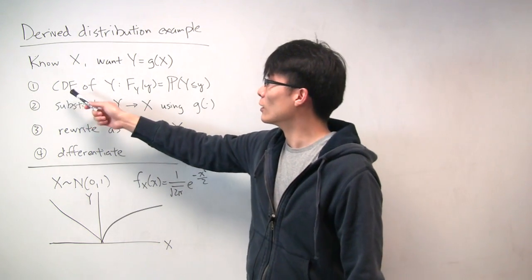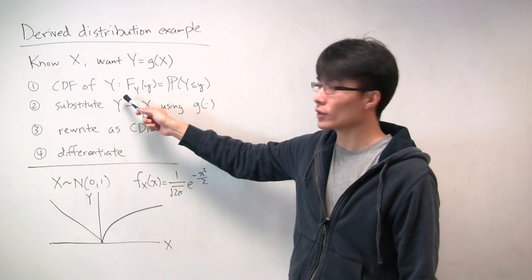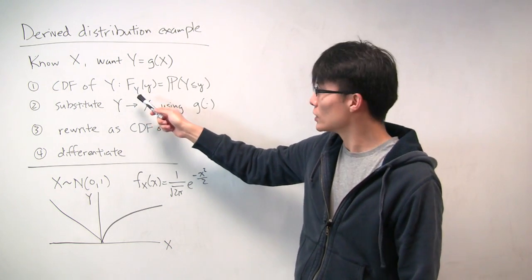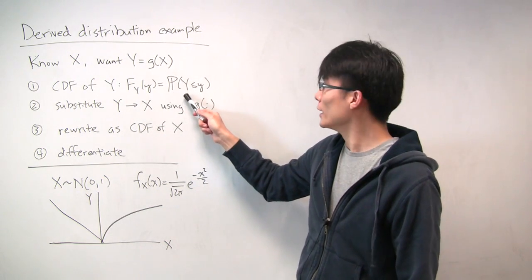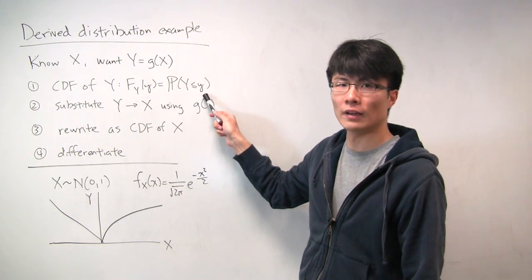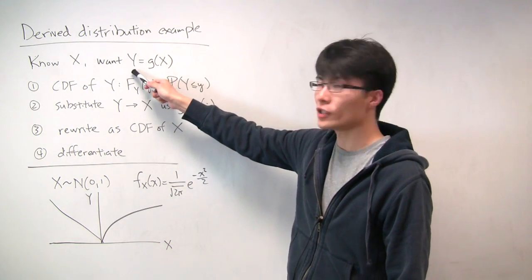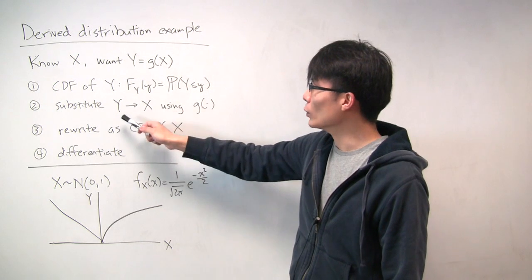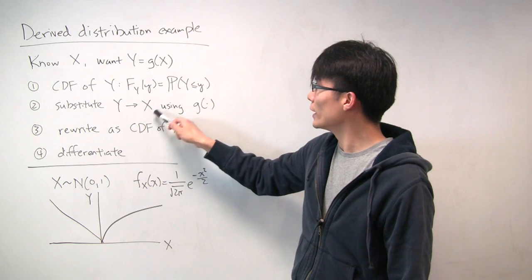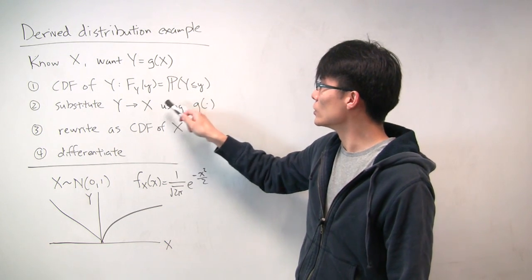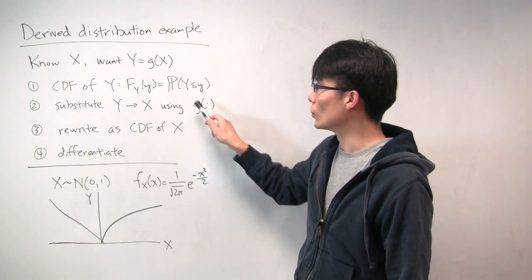The first step is to write out the CDF of y — that's the thing we want. The CDF is capital F of y of y, which is the probability that the random variable y is less than or equal to some value little y. The next step is to use the known relationship between y and x, and substitute in: instead of writing the random variable y, we'll write it in terms of x, using the function g.